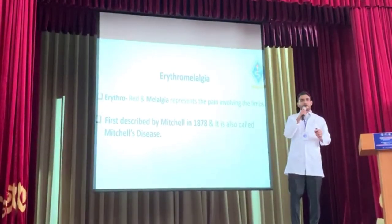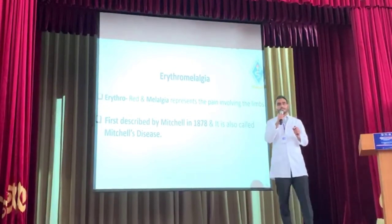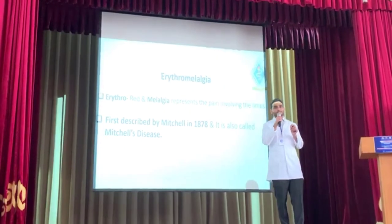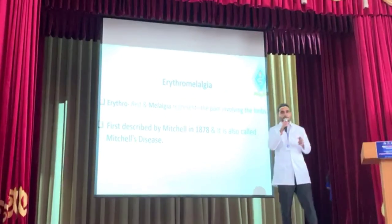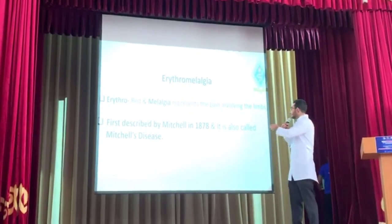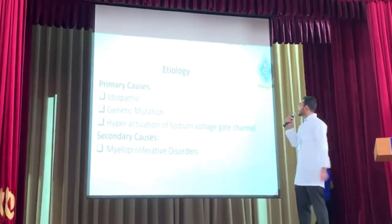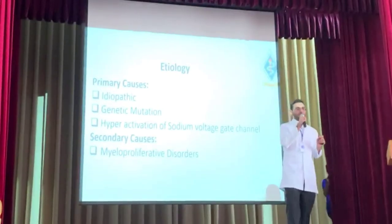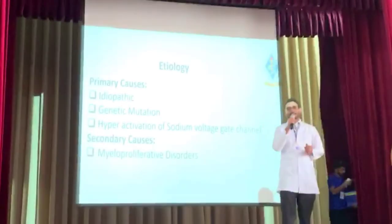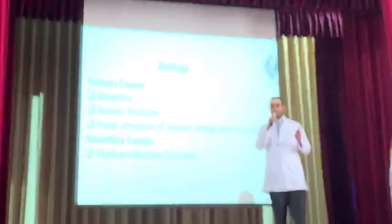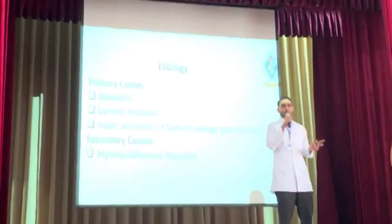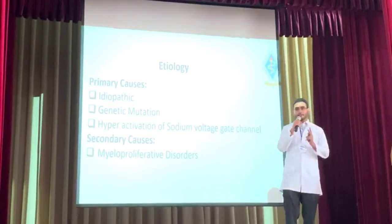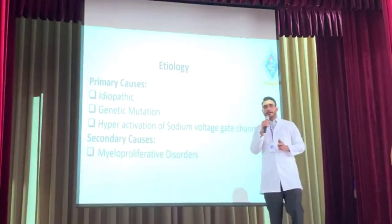Erythromelalgia was first described by Mitchell, so it is also known as Mitchell's disease. On the basis of causes, erythromelalgia is divided into two types: primary erythromelalgia and secondary erythromelalgia.